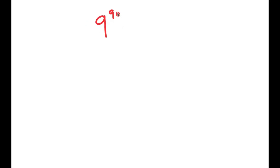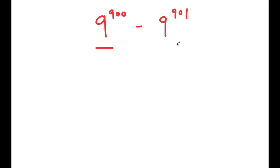In this video I'm going to be solving the problem 9 to the power of 900 minus 9 to the power of 901. To solve this I'm going to start by evaluating my terms. We have 9 to the power of 900 and 9 to the power of 901, and these two terms are pretty similar except that the exponent for 9^900 is one less than the exponent for 9^901.